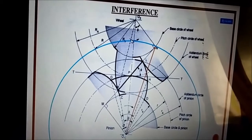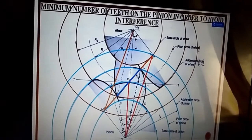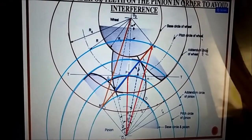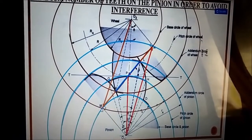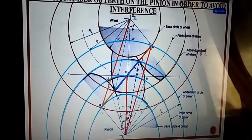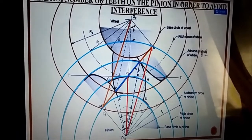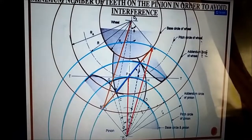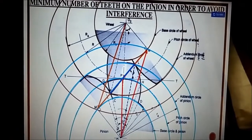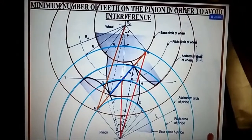In a similar manner, we can increase the addendum of gear 2 up to the point of tangency only. If we further increase this addendum, it goes inside the base circle, meaning it is in contact with the non-involute curve, and there is interference. Since interference is a negative phenomenon, there are methods to avoid it.